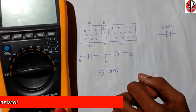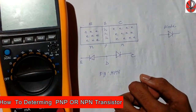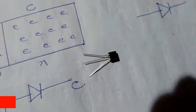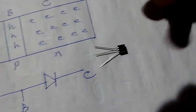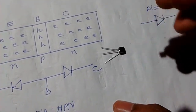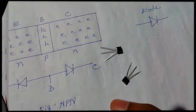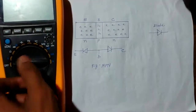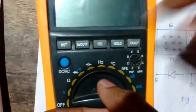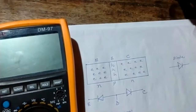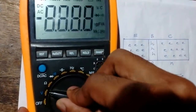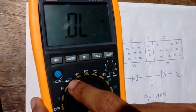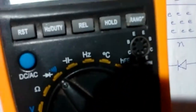Welcome to DPV Technology. Today we will see how to find out if a transistor is an NPN transistor or a PNP transistor. First of all, you need one multimeter and your transistor. Keep your multimeter in the diode position — you can see the diode symbol there.